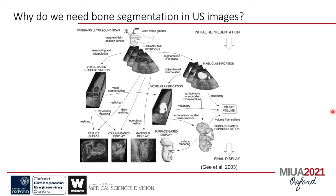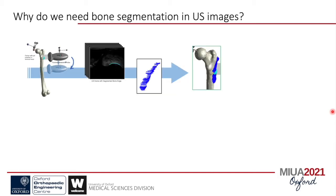3D freehand ultrasound has been developed for years. This diagram demonstrates a system that reconstructs 3D volumes with a freehand scan. We now take a step forward: take a freehand ultrasound sweep, record the probe position with an external localizer. By performing bone position segmentation in the image and registering all images in 3D space, we can build a 3D model.